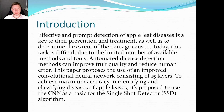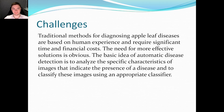Effective and prompt detection of apple leaf diseases is a key to their prevention and treatment, as well as to determine the extent of the damage cost. Today, this task is difficult due to the limited number of available methods and tools. Automated disease detection methods can improve food quality and reduce human error. This paper proposes the use of an improved convolutional neural network consisting of 15 layers. To achieve maximum accuracy in identifying and classifying diseases of apple leaves, it is proposed to use the TNN as a basis for the single-shot detector algorithm.